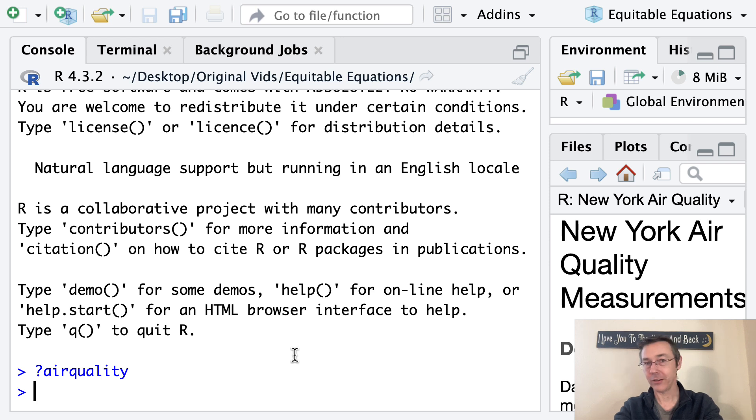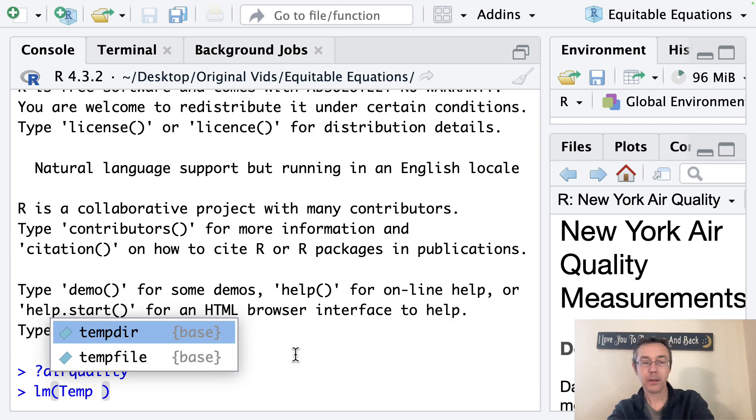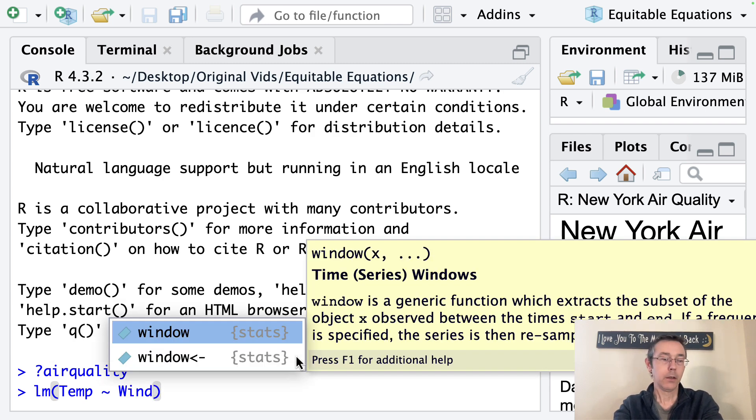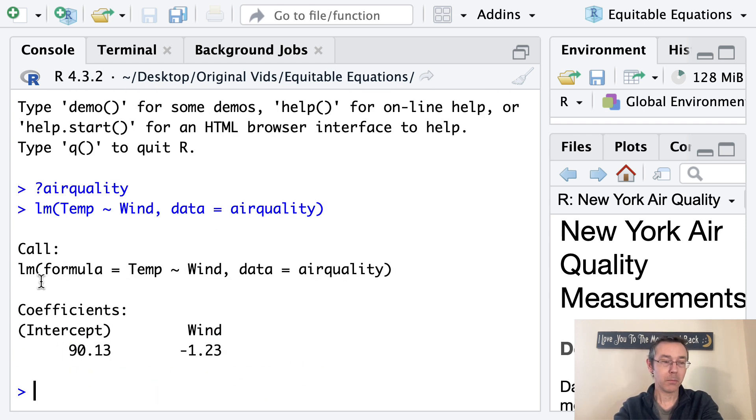So the syntax for getting this linear model in R is actually extremely simple. We're going to use LM for linear model. And then inside of the LM command, we use what's known as model notation. We put the response variable first. So in this case, temp. And then a tilde. And on my Mac, that's at the upper left-hand corner of my keyboard. And then the explanatory variable. So wind. You can read this as temp is explained by wind. Now, we've specified the variables we're interested in, but right now R doesn't know where to find them. We need to let R know those variables are found in the air quality data set. So data equals air quality. Now when I hit return, I'm going to get a very simple printout. It's going to remind me of what my formula was that I just used in the data set. And then it's going to give me two coefficients. The intercept and wind. The slope. So the equation of my regression line is going to be 90.13 minus 1.23 times x. So that's our answer for this very first question that I've asked here.